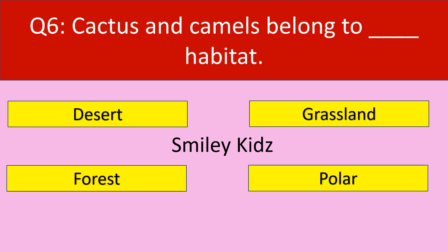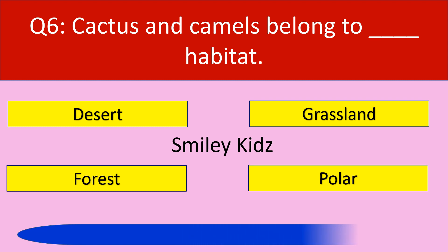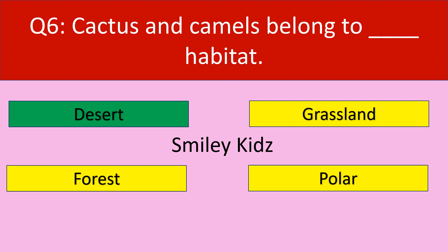Question number 6. Cactus and camels belong to which habitat? Options are: desert, grassland, forest, and polar. Your time starts now. Your time is up. The correct answer is desert. Cactus and camels belong to desert habitat.